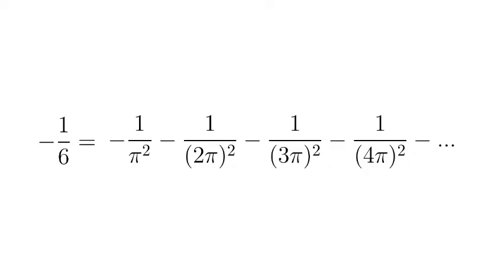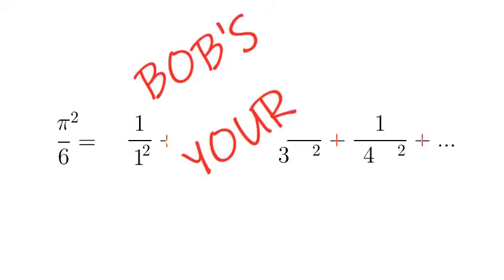We can lose the negative signs, factor out the first term, shuffle over the pi squared, and Bob's your uncle.